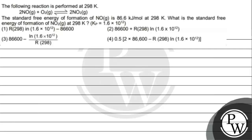Hello, children. Let's read this question. The question says the following reaction is performed at 298 Kelvin. We have nitric oxide reacting with oxygen to give 2 moles of nitrogen dioxide. The standard free energy of formation of nitric oxide is 86.6 kJ per mole at 298 Kelvin. What is the standard free energy of formation of nitrogen dioxide at 298 Kelvin? We have Kp = 1.6 × 10 raised to the power of 12, and options are given to us.